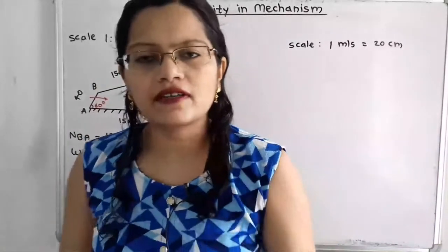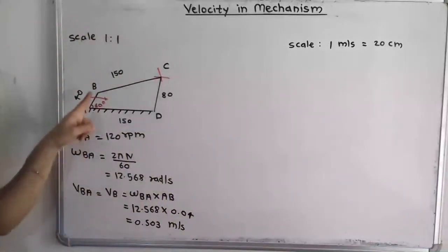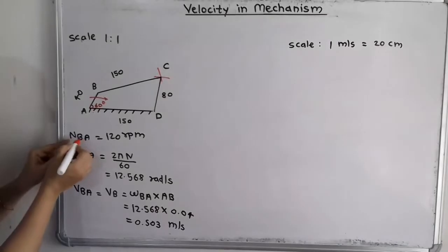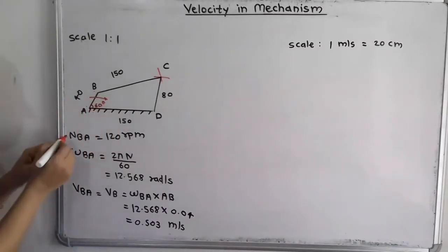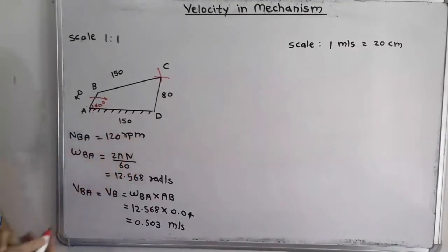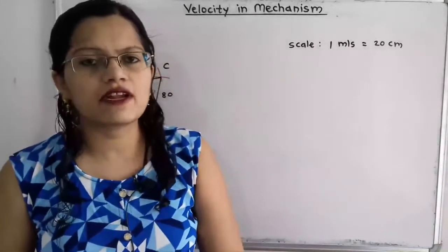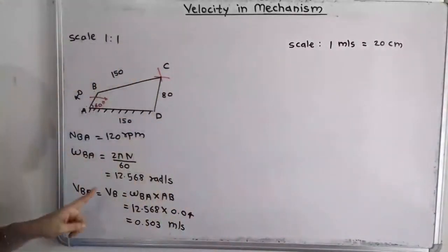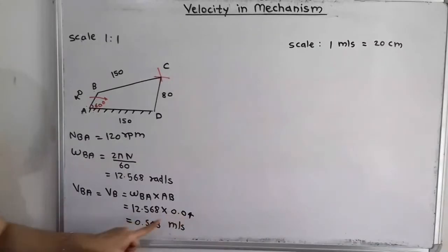As per the given data, we will first calculate the linear velocity for bar AB. The rotational speed of B with respect to A is given, so we denote it NBA. B is rotating about fixed point A, so NBA equals 120 RPM. From that, we calculate omega BA: 2π × 120 / 60, which equals 12.568 radians per second. From this omega, we calculate the linear velocity VBA. Since point A is fixed, VB = ωBA × AB = 12.568 × 0.04 meters = 0.503 meters per second.